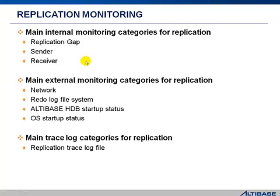For the external category, you can use OS commands to check the network status. You can also check the available log file system space, because the log file might not be deleted because of replication. Also, replication cannot be activated if Altbase is not activated properly, so you can check with a command like 'ps -ef' to see whether Altbase is currently operating normally. When checking the trace log file, you can check the file called 'altbase_rp.log', which contains information of all error messages related to the replication environment, including what kind of conflict occurred and when replication started and ended.